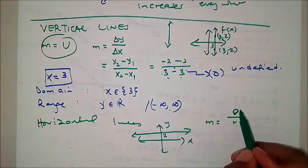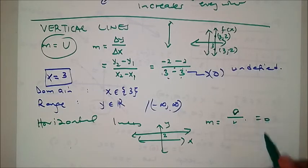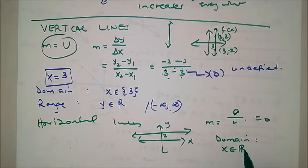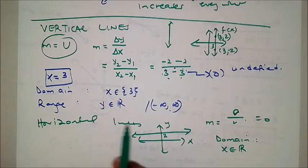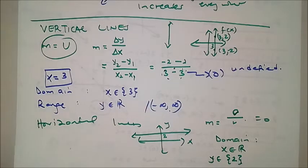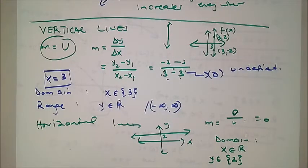For a horizontal line at y = 2, the domain is x is an element of real numbers, because there is no x value that makes y undefined. The range is y is an element of {2} — just that one value.